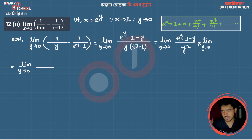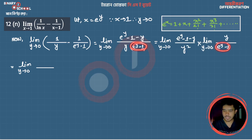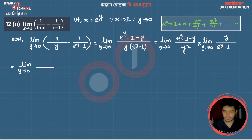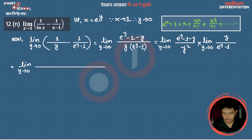Into the limit as y tends to 0 of (e^y minus 1) — we can apply the formula for e^y. We can write the Taylor series expansion: e to the power y equals 1 plus y plus y squared by 2 factorial plus y cubed by 3 factorial plus dot dot dot.